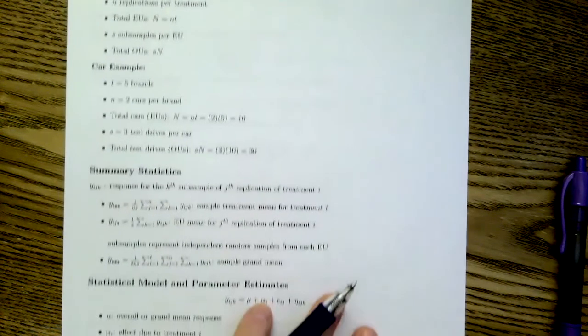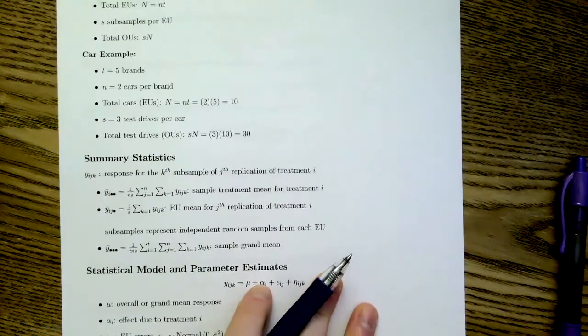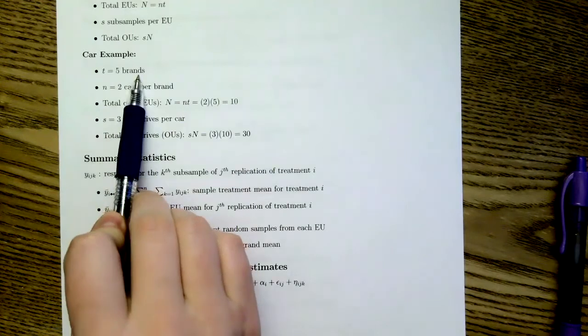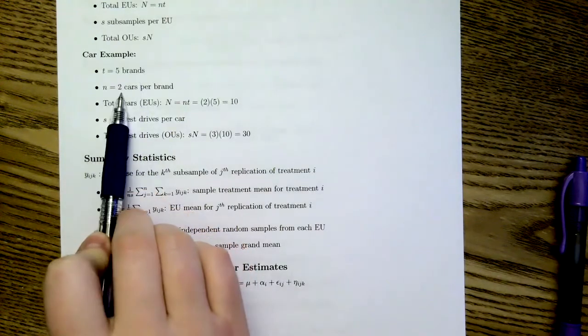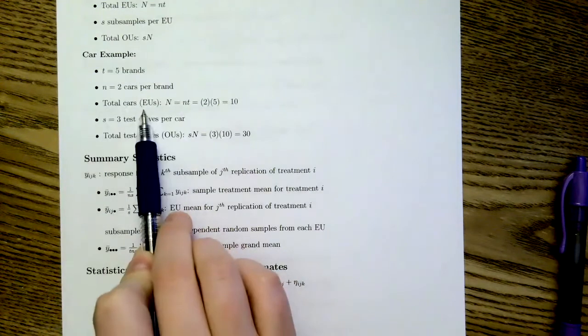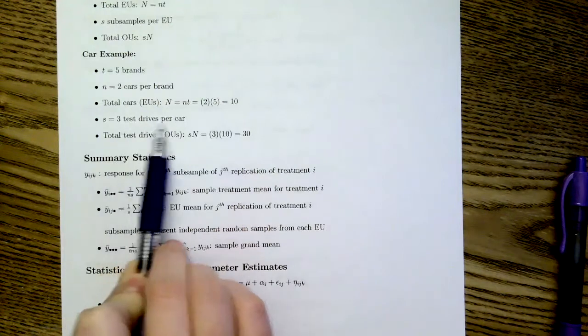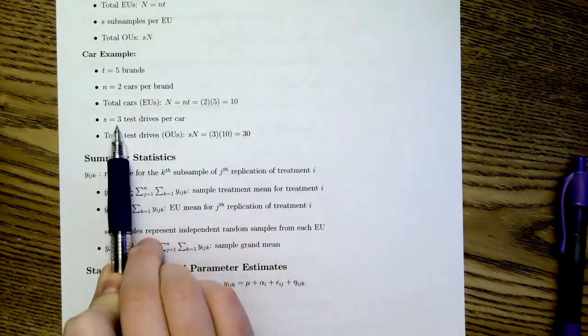In our car example, we had t brands - A, B, C, D, E. We had two cars per brand. So our total number of experimental units was 10. For each car, we had three test drives, and so our total number of observational units was 30.